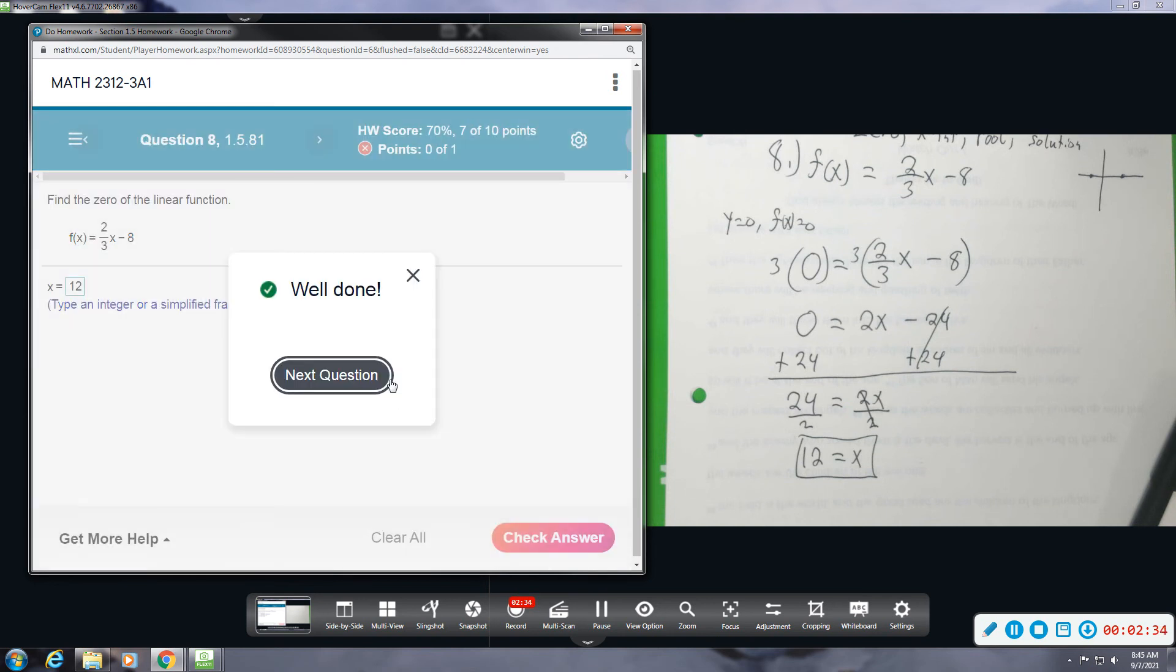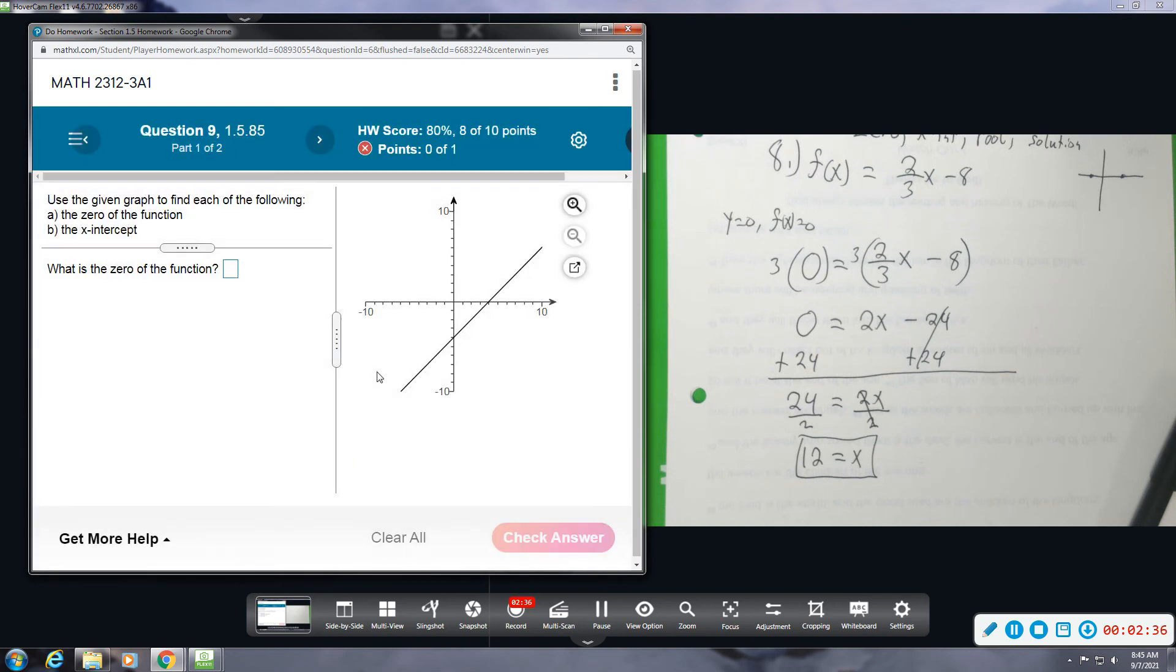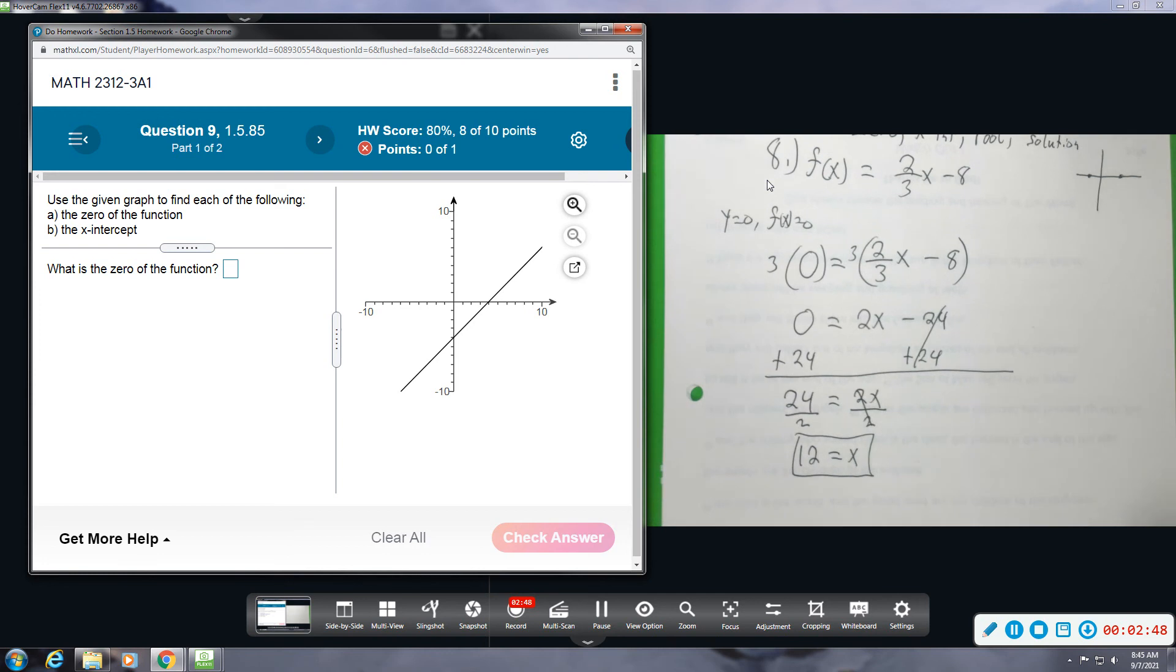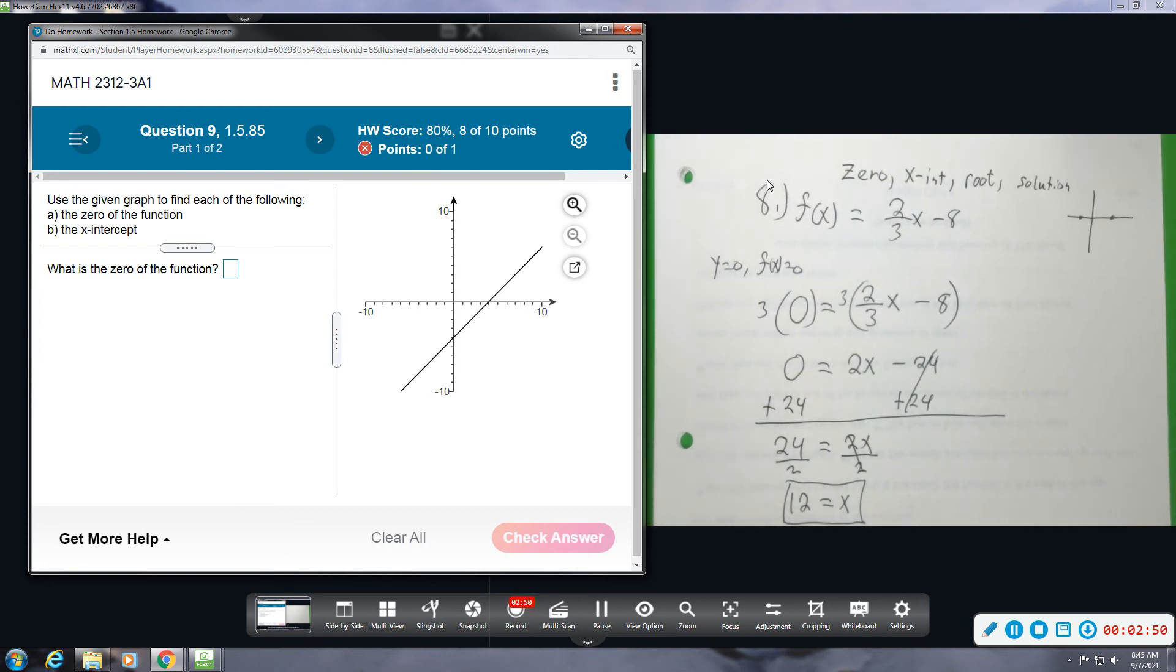Number 9 says use the given graph to find each of the following. Part a, we're going to find the zero of the function. So again, same thing that we're doing here. Zero. And then part b says we're going to find the x-intercept. So it's the same thing - they're asking you to find the same thing twice.